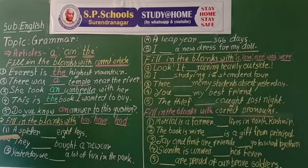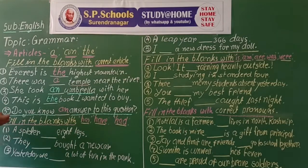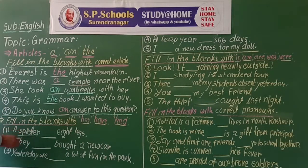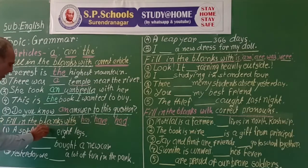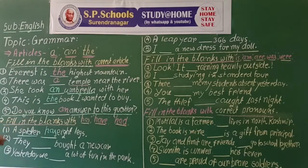A spider has eight legs. A spider — third person singular noun — takes 'has'. An insect has eight legs.